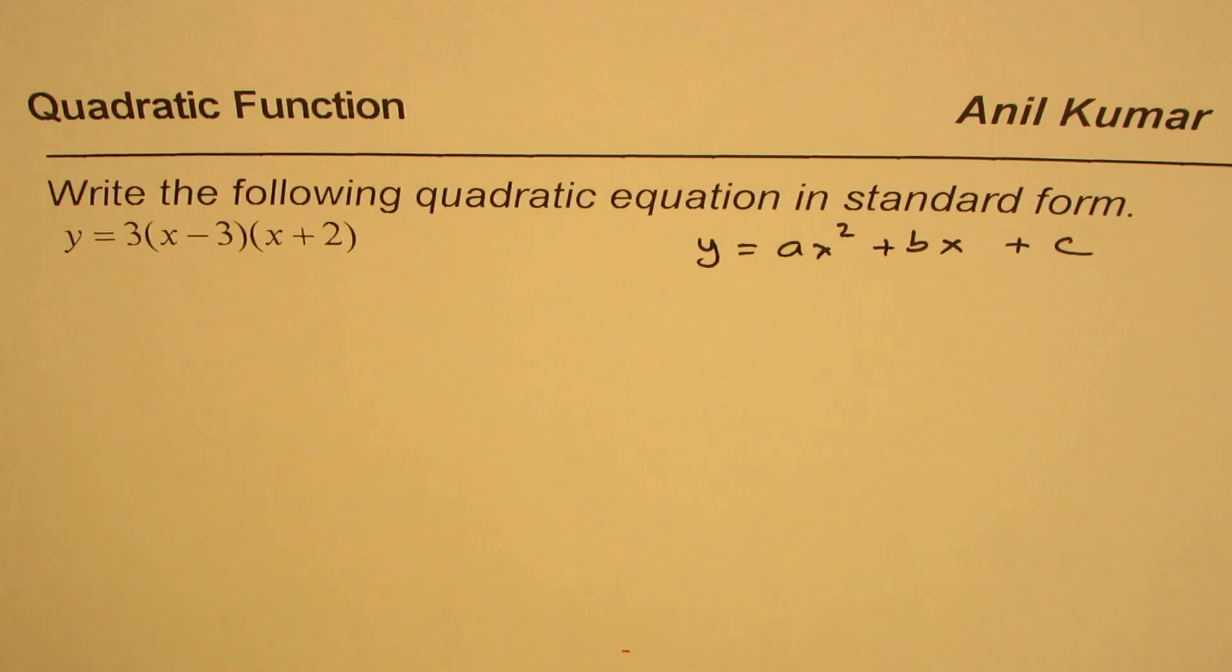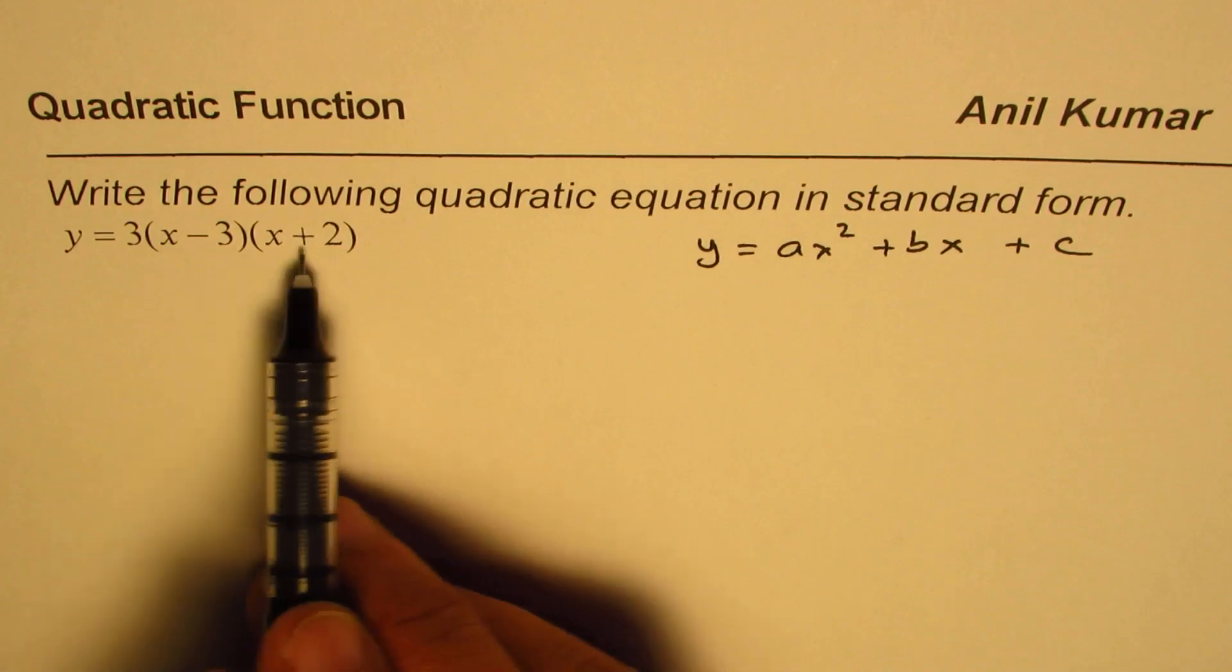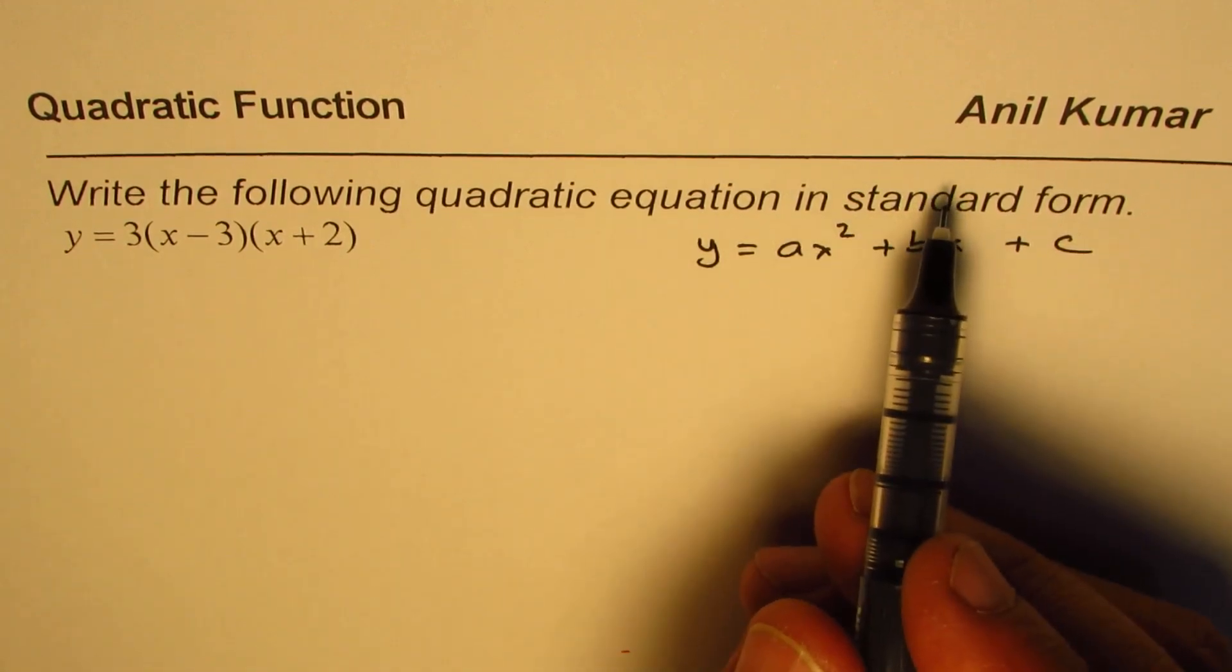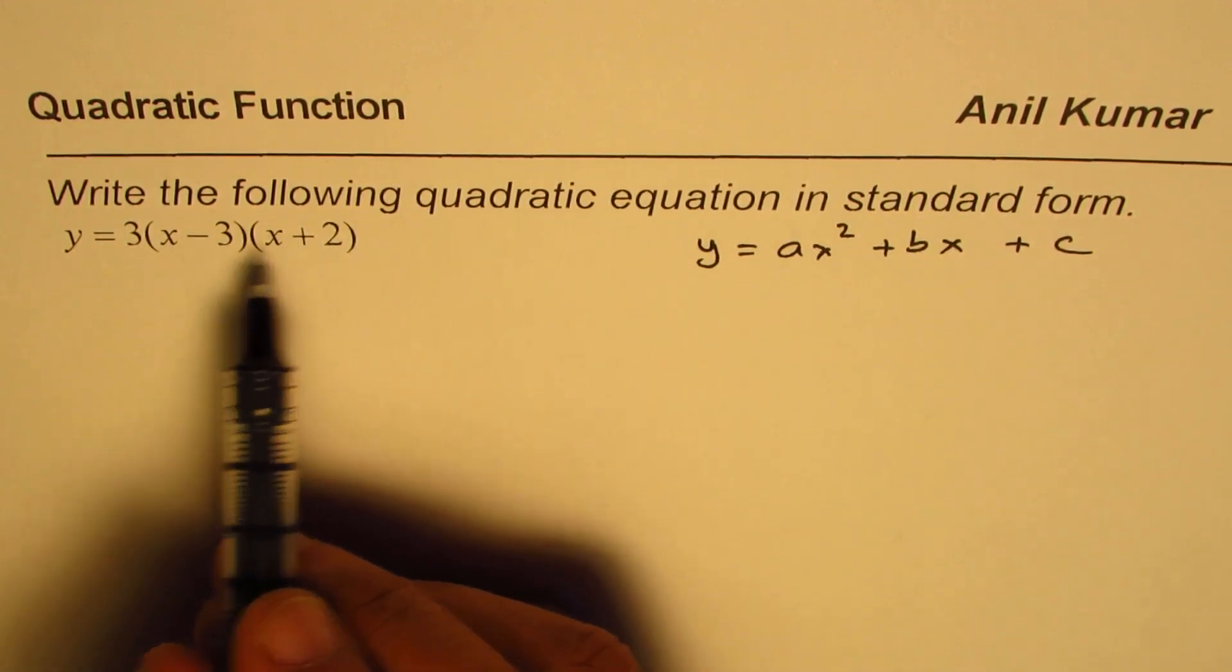In this form, we can very easily find the x-intercepts and therefore it is also called the intercept form, right? To write it in standard form, we need to expand, right?